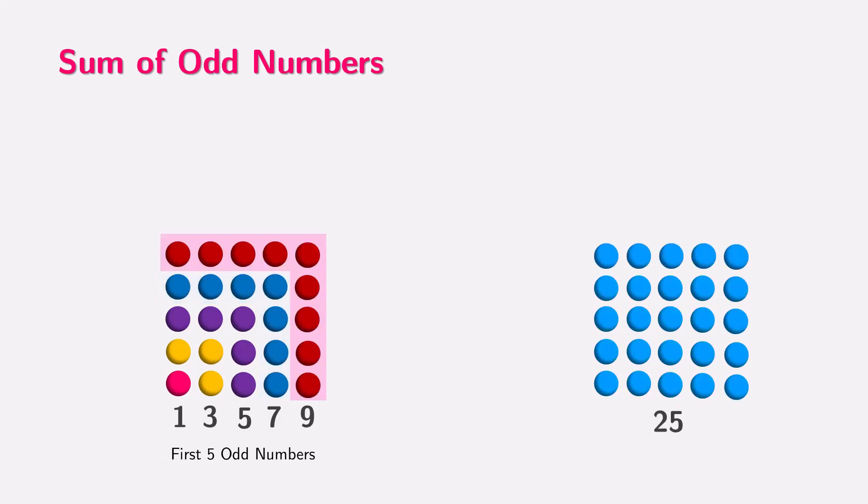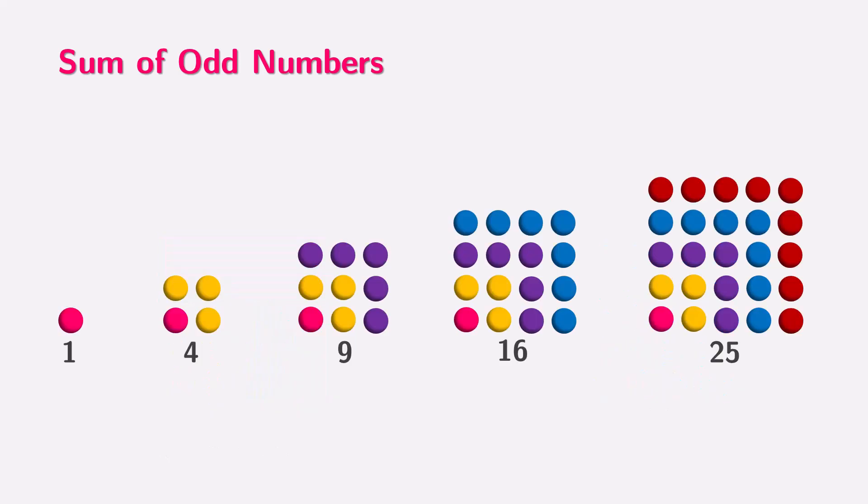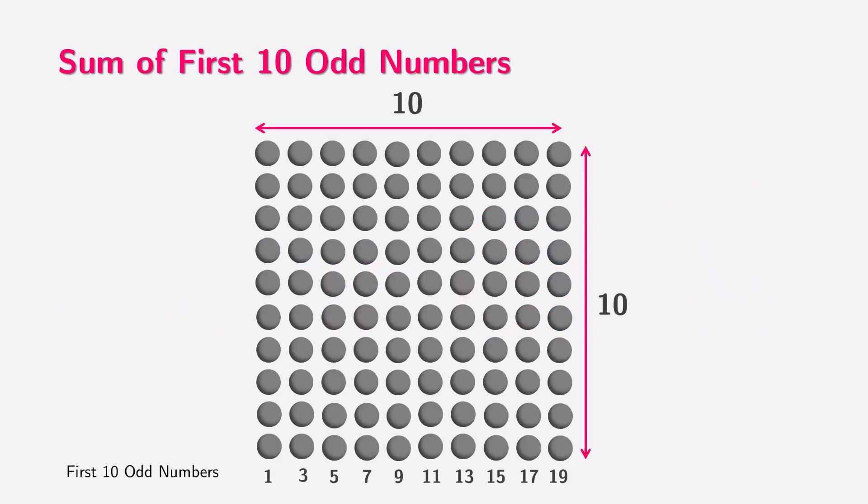This keeps happening, and it's such a beautiful pattern. But why does this happen, and will it continue forever? Let's find out by using pictures. Because this works for any size of the square, we can see why adding odd numbers always gives us square numbers. Can you figure out the sum of the first 10 odd numbers? Yes, the sum of first 10 odd numbers is 100.